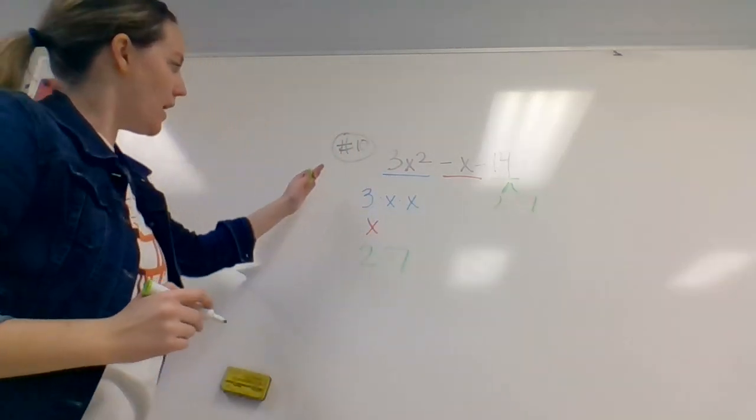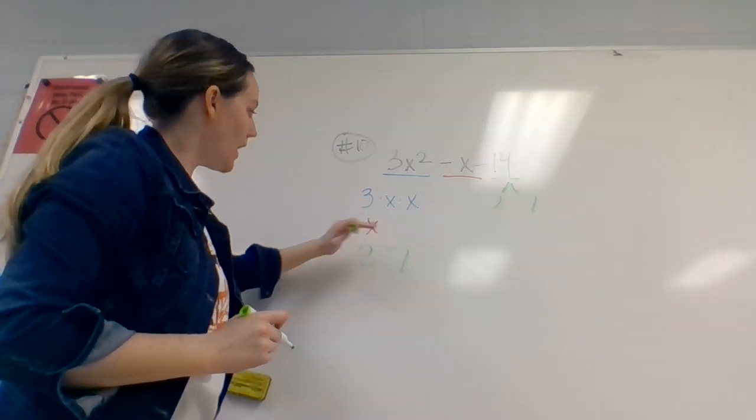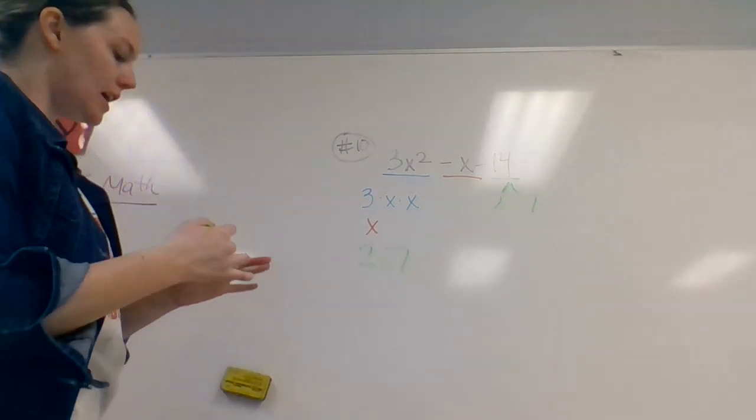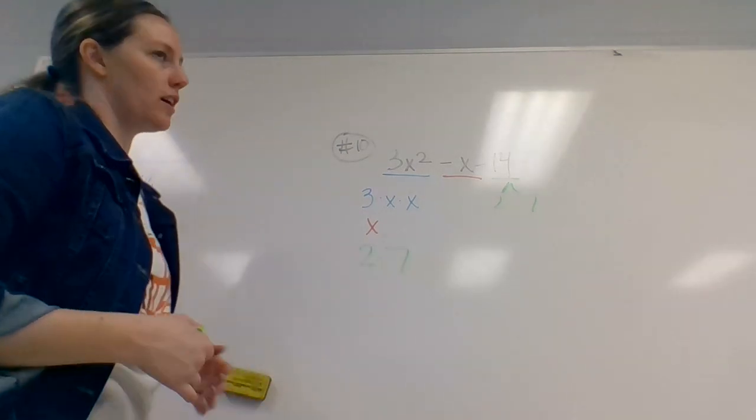Now in this case, I don't have anything that all three of these numbers have in common. 3 times x times x and x and then 2 times 7. So in this case, you can actually say that this one is not factorable because it doesn't share any factors.